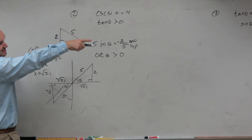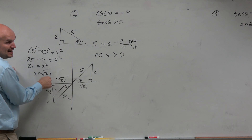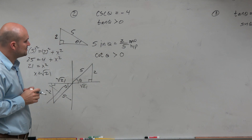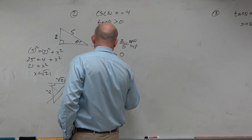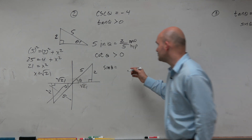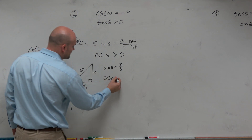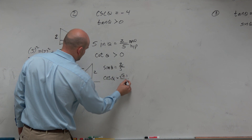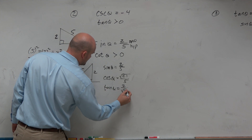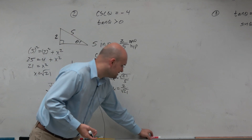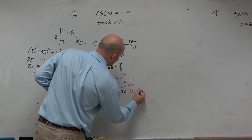If the problem were changed — and you can see some negative problems — you'd need to understand when the value needs to be negative. For this problem we don't need to worry about it. Now we evaluate: sine is already given as 2 over 5. Cosine of theta is adjacent over hypotenuse, which is the square root of 21 over 5. Tangent of theta is opposite over adjacent, which is 2 over the square root of 21.